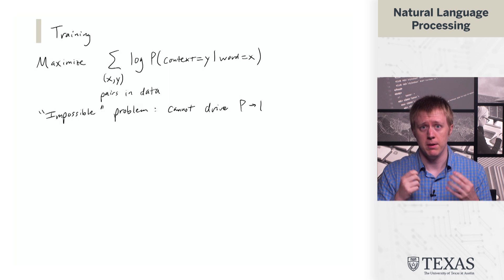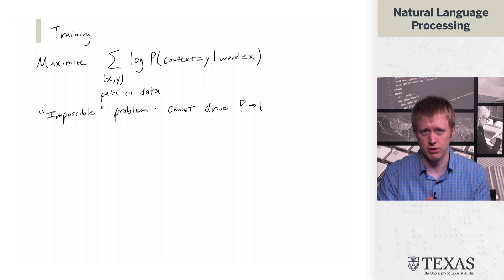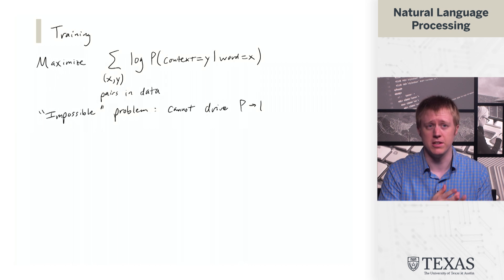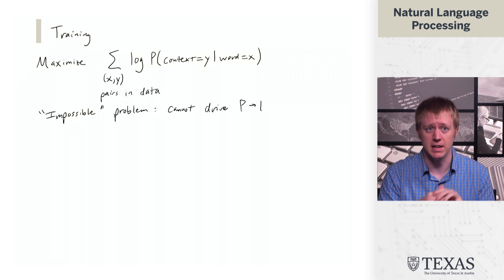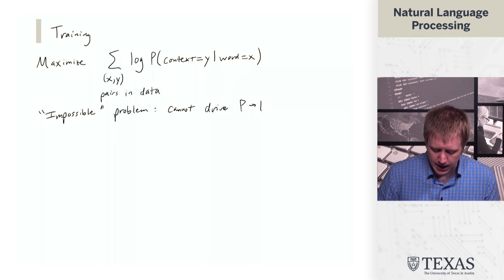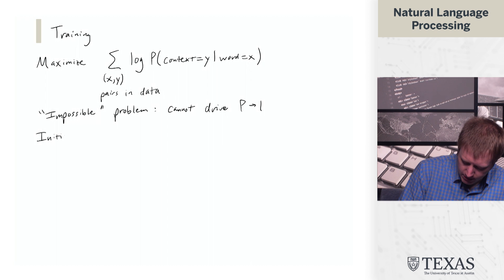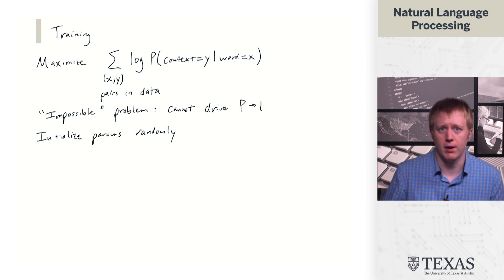We're never going to be able to completely optimize this objective from the standpoint of getting every prediction to be of probability 1. Because there's going to be many words that occur in the context of a single word x. So you're going to have these conflicting training examples. So unlike classification where it's totally reasonable to assume that you can fit the data perfectly, and in many cases a big enough neural network will, here that's not going to happen.